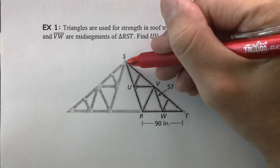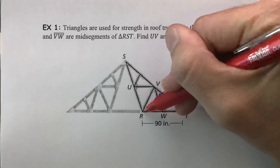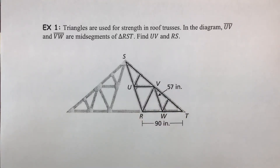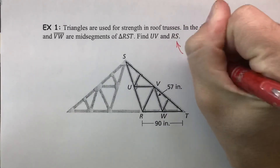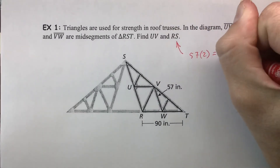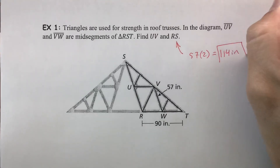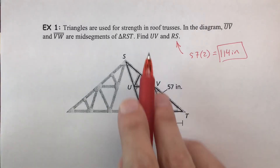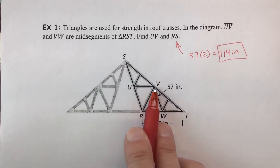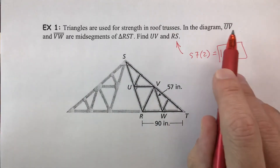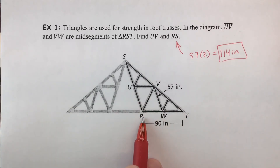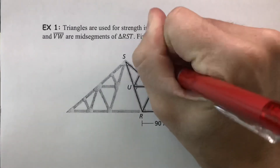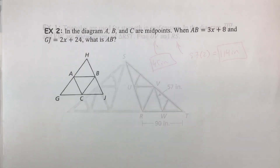VW is 57 inches and is a midsegment. VW runs parallel to SR, so SR must be twice as much as 57. Therefore RS equals 57 times 2, which is 114 inches. Next, RT is 90 inches, and UV is also identified as a midsegment — it will be half the length of RT. So UV equals 90 divided by 2, which is 45 inches.